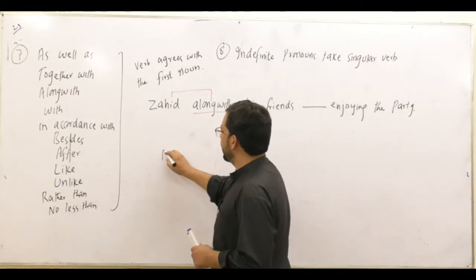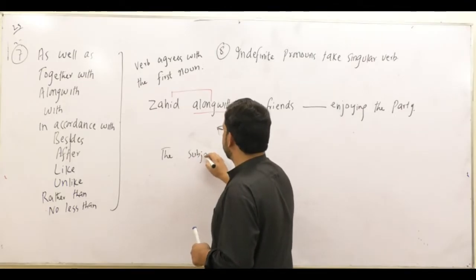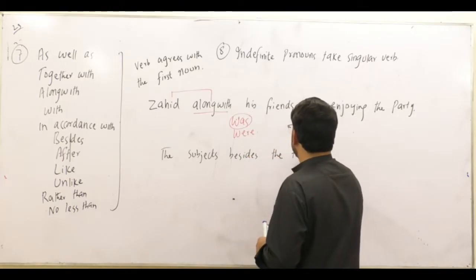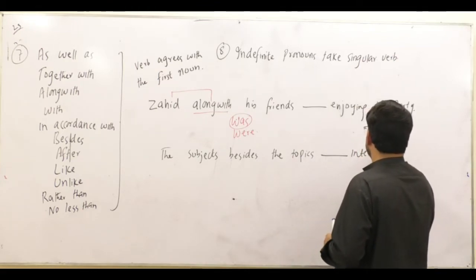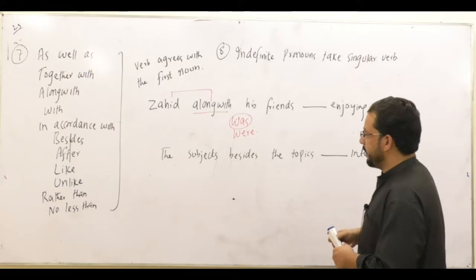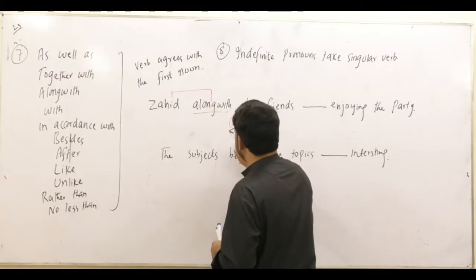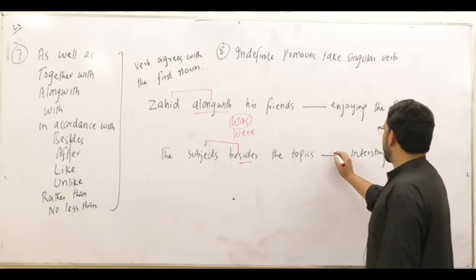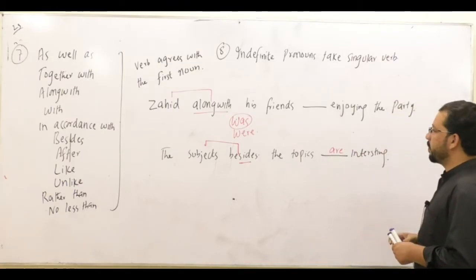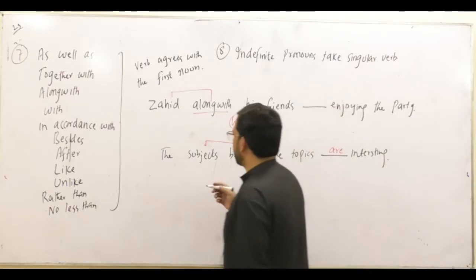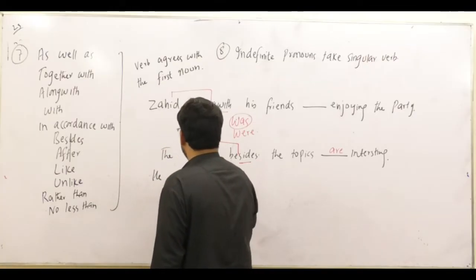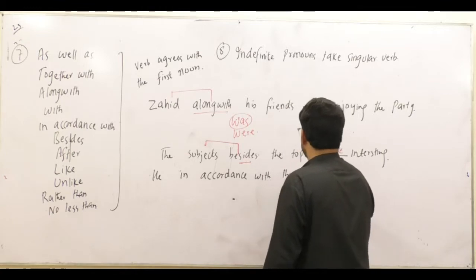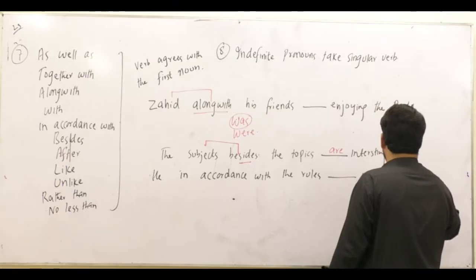Then, for example: the subjects, besides the topics, dash interesting. Now we have 'besides'. Before 'besides' we have 'the subjects', which are plural, so we will put 'are'. The subjects, besides the topics, are interesting. Similarly: he, in accordance with the rules, dash working hard — again, verb agrees with the first noun.